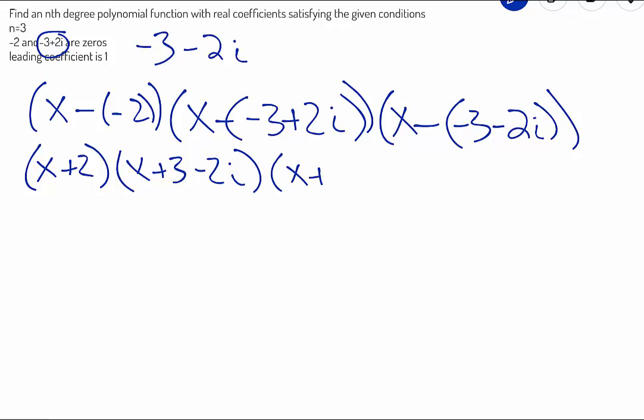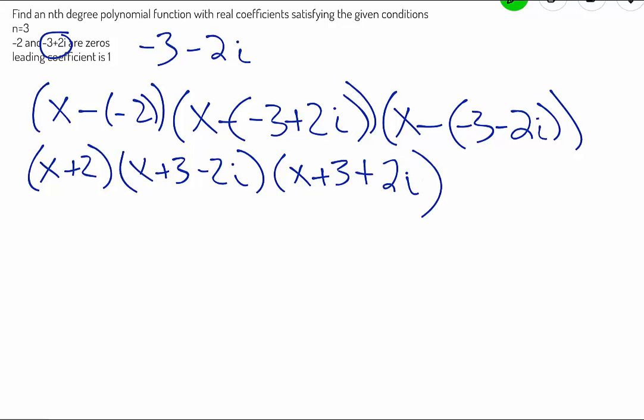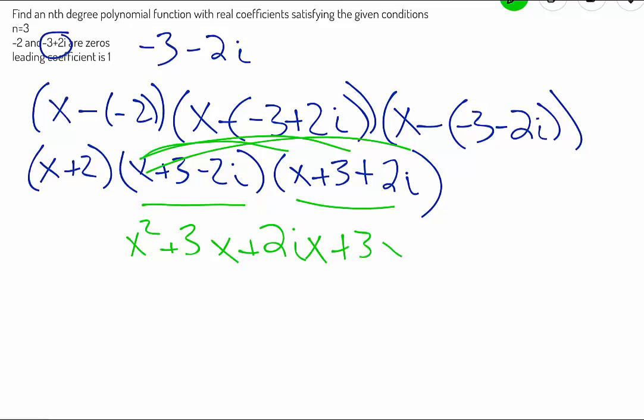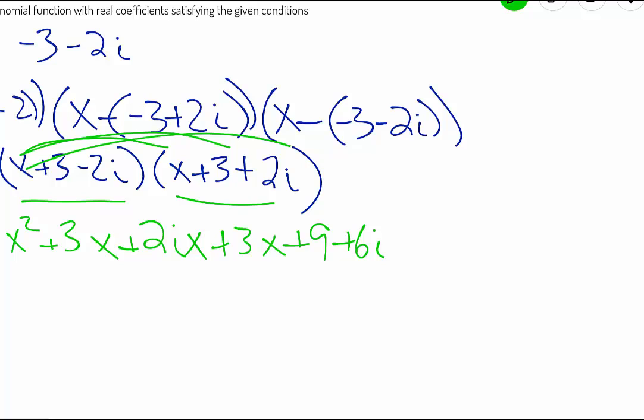So I'm going to multiply the two trinomials together first, multiplying everything by x. x times the second trinomial, so that's x² + 3x + 2ix. Multiply everything by 3 now to get 3x + 9 + 6i. And if we multiply everything by -2i now, that gives us a -2ix, a -6i, and a -4i².